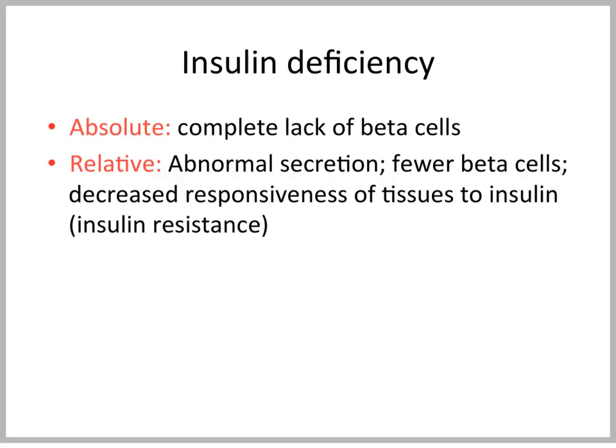Diabetes is associated with insulin deficiency. We can either have an absolute insulin deficiency, where we cannot show that insulin is still being released from beta cells — usually associated with a complete lack of beta cells — or we can have a relative insulin deficiency, where we have fewer beta cells, a decrease in beta cell mass, and abnormal secretion. This goes along with decreased responsiveness of tissues to insulin, which we call insulin resistance.